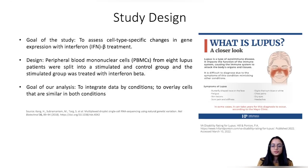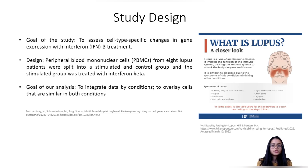Today we are going to use a lupus dataset. Lupus is an autoimmune disease that impacts the immune system, causing it to attack the body's own organs and tissues. The dataset consists of peripheral blood mononuclear cells from eight lupus patients split into stimulated and control groups. The stimulated group was treated with interferon beta. The goal of the original study was to assess cell-type-specific changes in gene expression with interferon beta treatment.